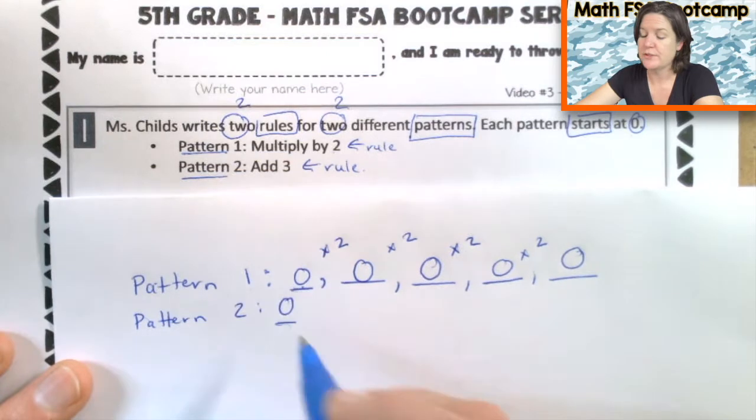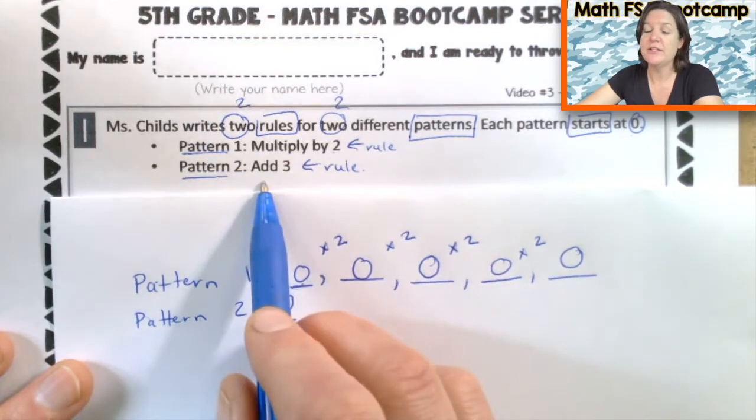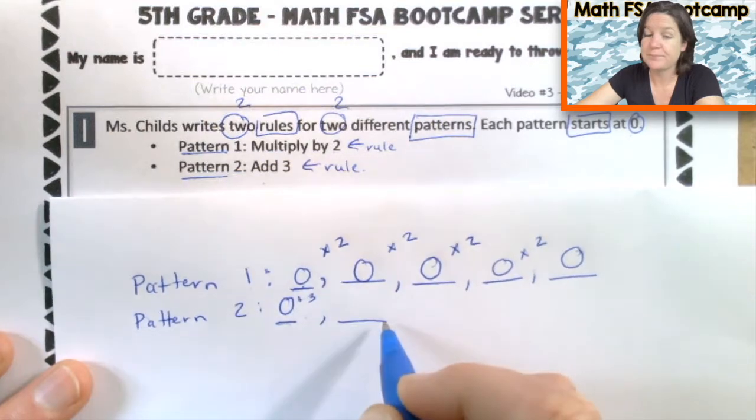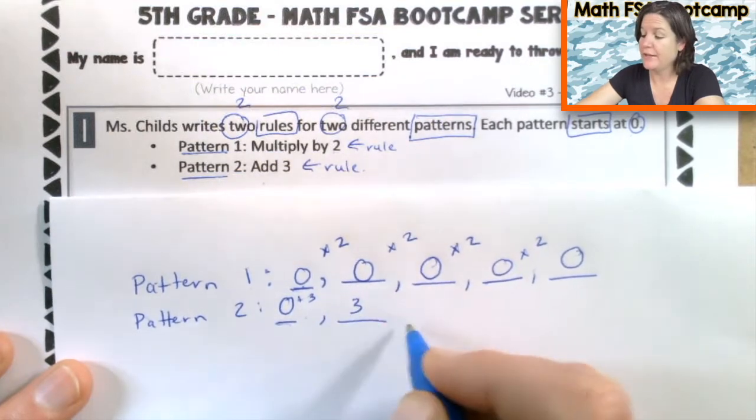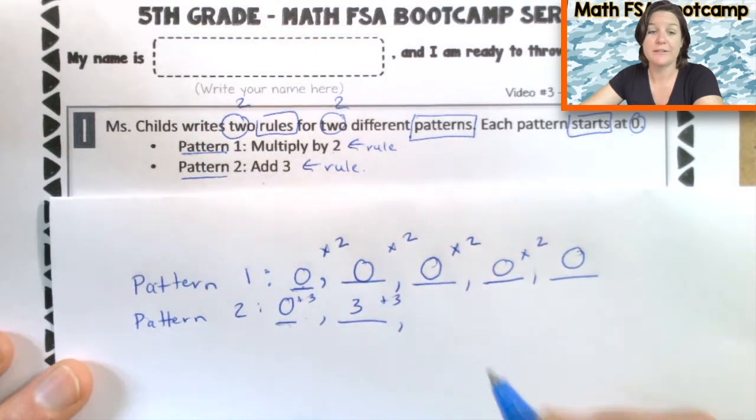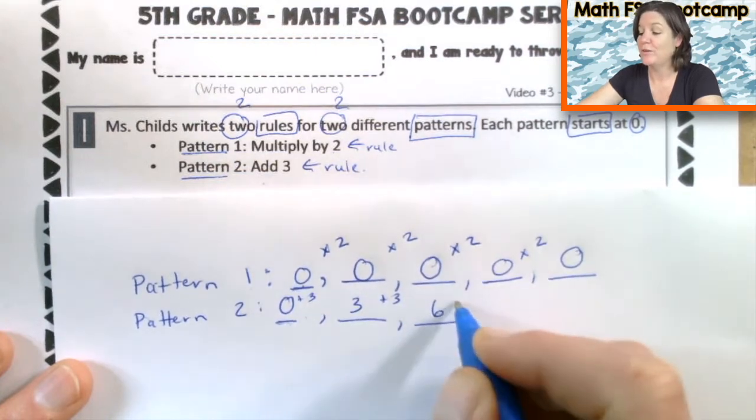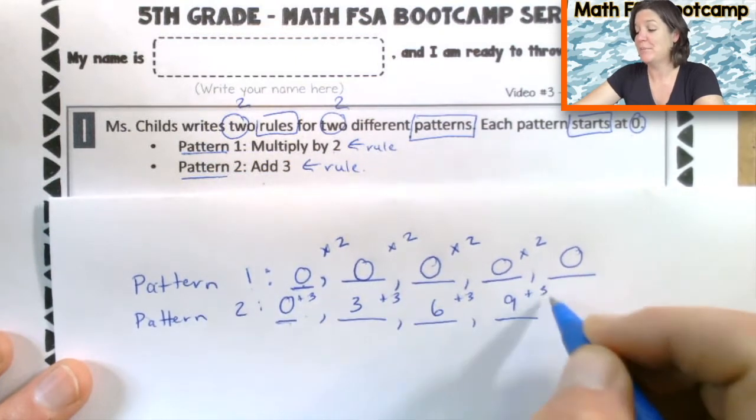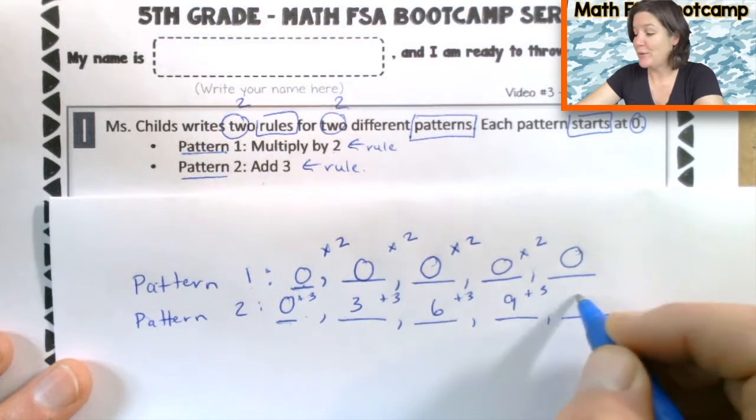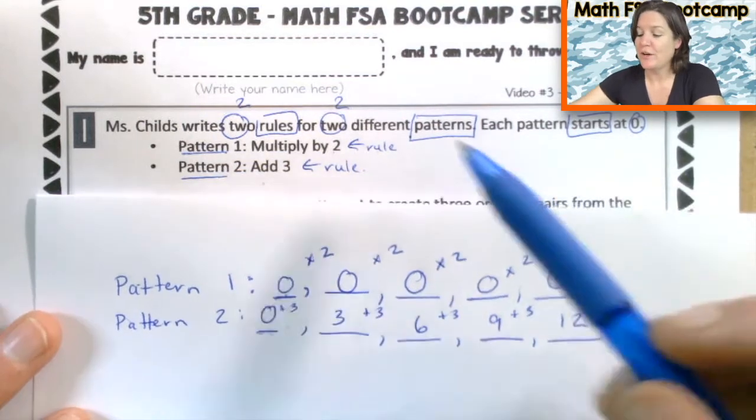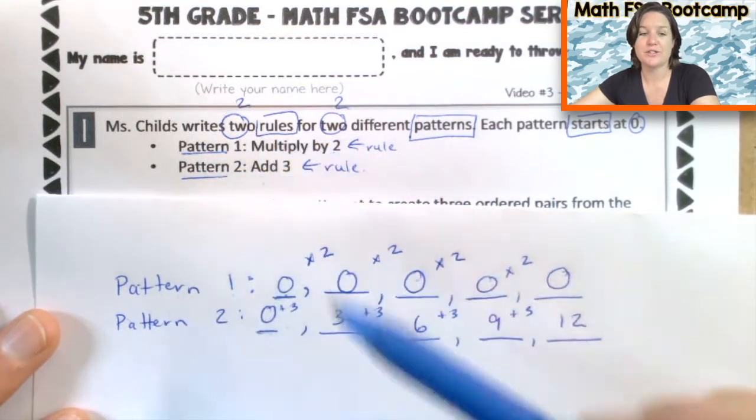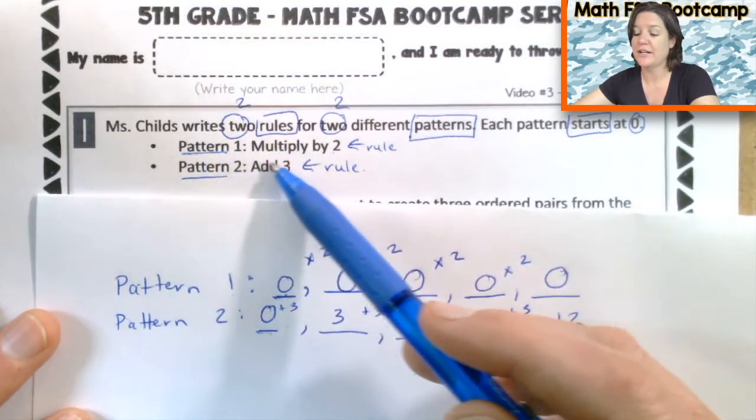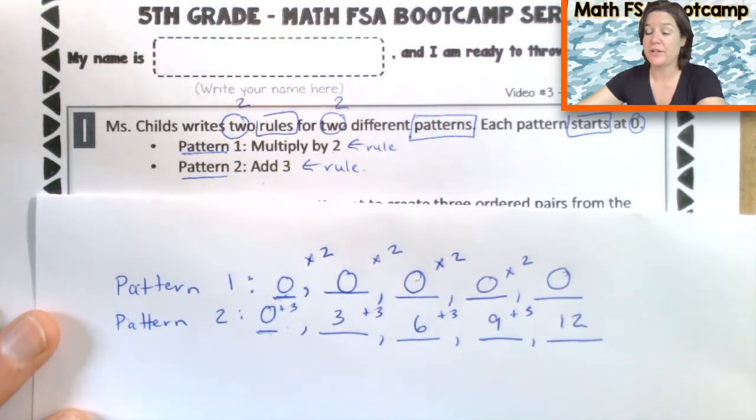Now pattern number two starts at zero. And this rule is to add three. So what is zero plus three? Three. And what is three plus three? Six. And what is six plus three? Nine. And what is nine plus three? Twelve. This is fun. So, so far, we've understood this part. She has two rules. Each one starts at zero and we've taken the pattern and we've extended the rule here.